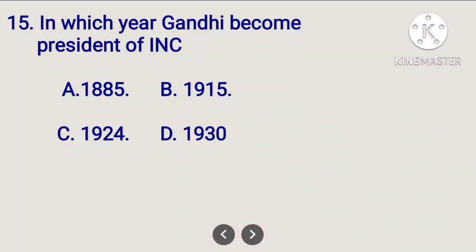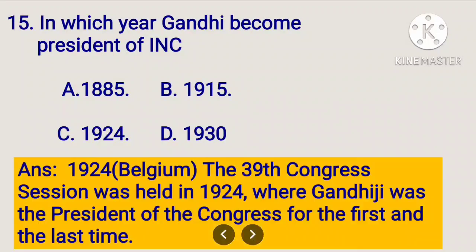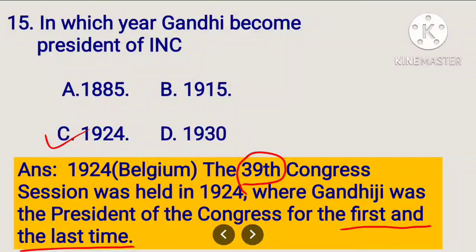In which year did Gandhi become president of INC? The correct answer is 1924. It was the first and last time Gandhi presided over the Congress session in 1924.